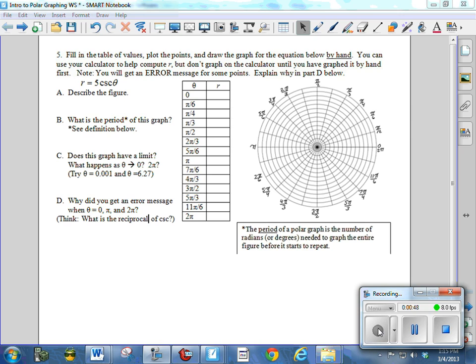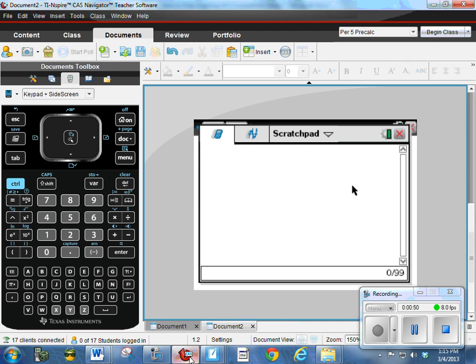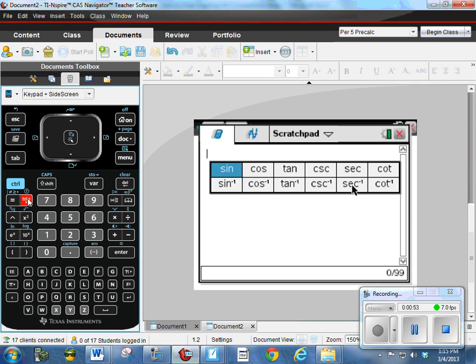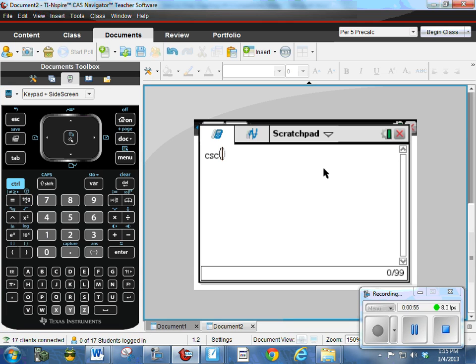So on the calculator, I'm on a graphing scratch pad, and I'm just going to go to trig and cosecant and put in 0 and see what I get. See, it's undefined. Why is it undefined? Well, it's undefined because cosecant is 1 divided by sine of theta. And sine of theta is 0 when we put in 0. The sine of 0 is 0, so I'm dividing by 0, so that's why it's undefined.